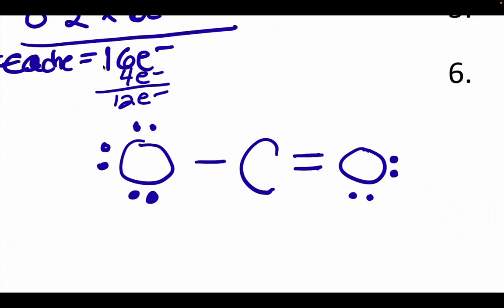Right now, the oxygen on the right still has 8, and the carbon has only 6. So we can take another pair from the other oxygen. Now everyone has 8, each of the oxygens and the carbon.